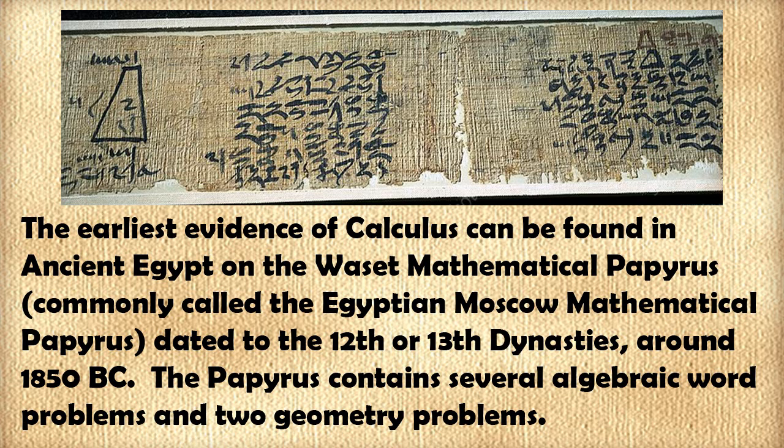So for the remainder of this video, the papyrus will be referred to as the Waset mathematical papyrus. The Waset mathematical papyrus is dated to the ancient Egyptian 12th-13th dynasty around 1850 B.C. The Waset mathematical papyrus contains several algebraic word problems and two geometry problems.